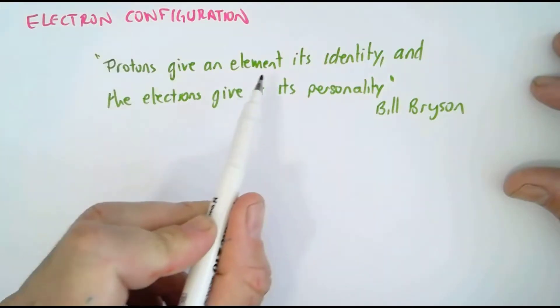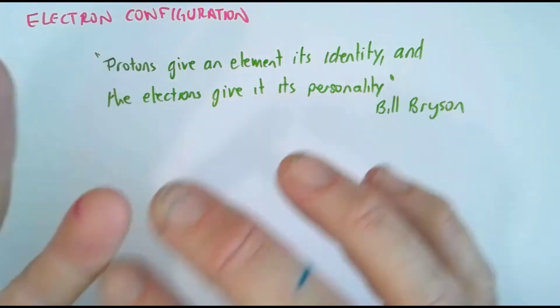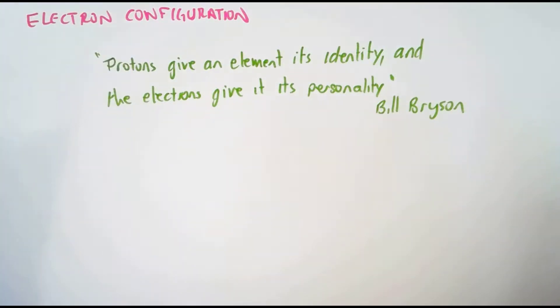Protons give an element its identity. Well, it's because it's the number of protons that dictate what particular element it is. Carbon has got six protons. If it didn't have six protons, it wouldn't be carbon, for example.